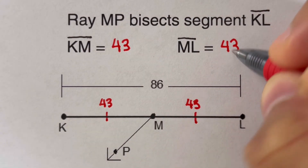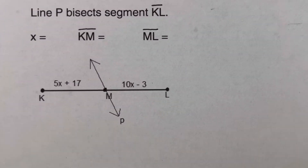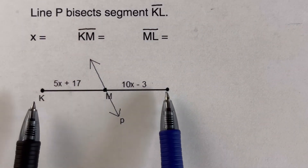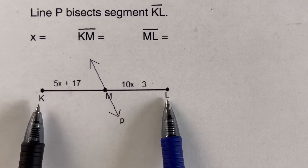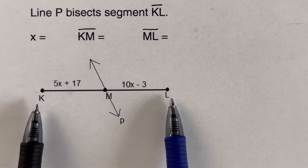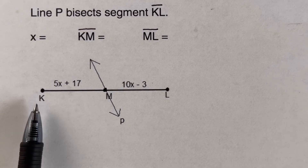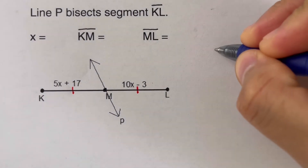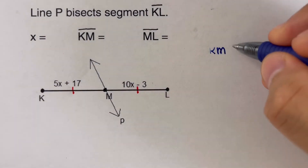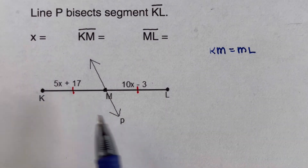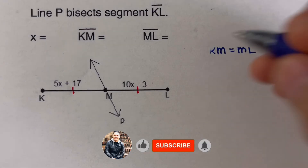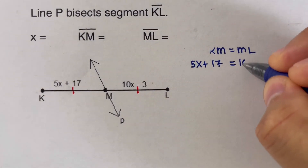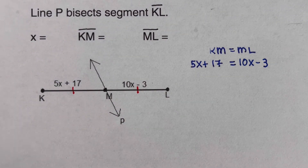In this example, line p bisects segment KL. Since bisect means to cut or divide into two equal pieces, line p divides KL into two congruent parts, so KM equals ML. Plugging in the given expressions: 5x + 17 equals 10x − 3. We need to solve this equation to find x.